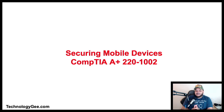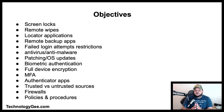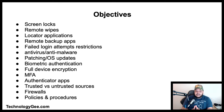What up everybody, this is your boy Tech G back with another video to help you successfully pass the CompTIA A+ 220-1002 examination. In this video you're going to learn about screen locks, remote wipes, locator applications, remote backup applications, failed login attempt restrictions, anti-virus/anti-malware, patching, operating system updates, biometric authentication, full device encryption, multi-factor authentication, authenticator applications, trusted versus untrusted sources, firewalls, and policies and procedures.